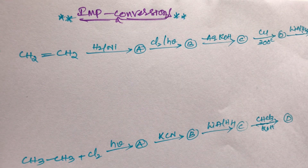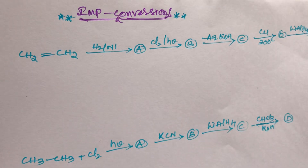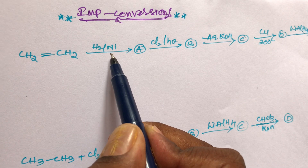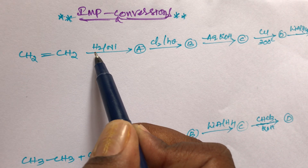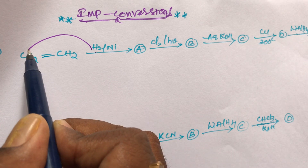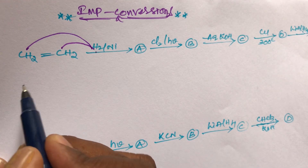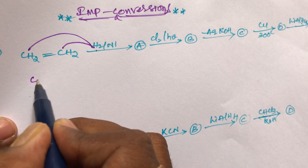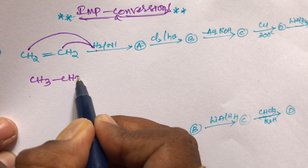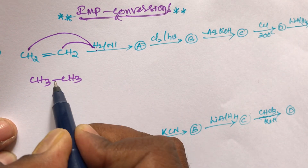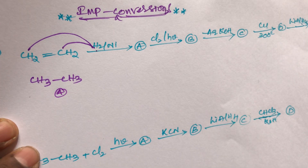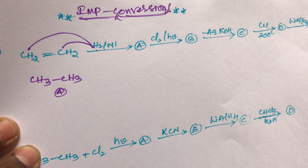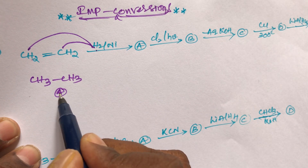Ethylene contains a double bond. Double-bonded compounds generally undergo addition reactions. So the first step is an addition reaction — catalytic hydrogenation. Ethylene reacts with hydrogen in the presence of nickel. Two hydrogens are added: one hydrogen combines with each carbon, breaking the double bond and converting it to a single bond. We get CH₃–CH₃. This is compound A, formed by catalytic hydrogenation, which belongs to free radical addition.